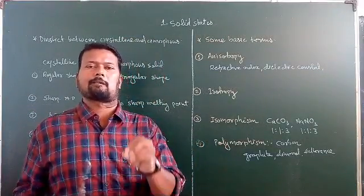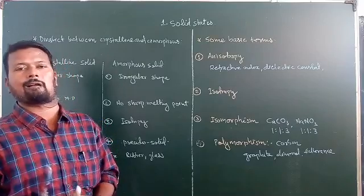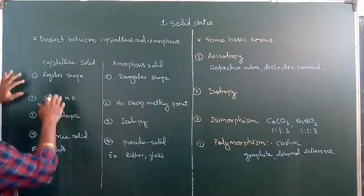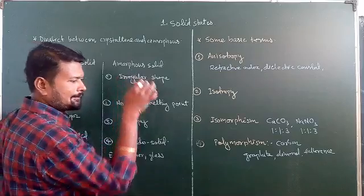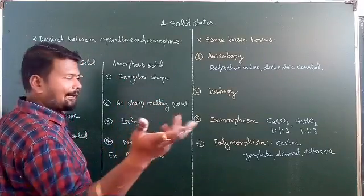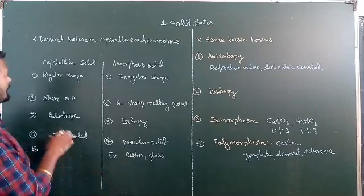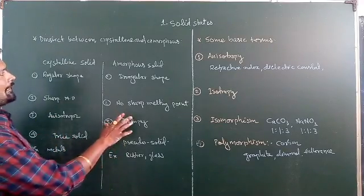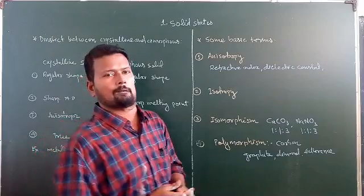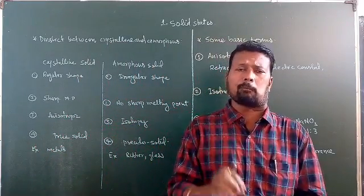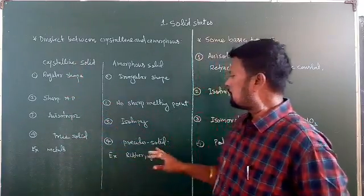Now let us summarize the differences between crystalline and amorphous solids. Crystalline solids have a regular shape; amorphous solids do not. Crystalline solids show anisotropic properties while amorphous solids show isotropic properties. Crystalline solids are true solids, while amorphous solids are pseudo solids, also known as supercooled liquids.